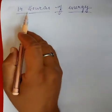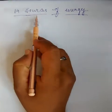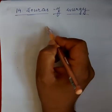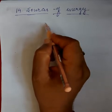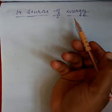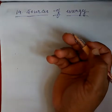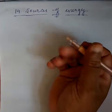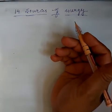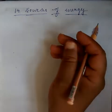Good morning. Today we start the new lesson — Chapter 14: Sources of Energy. In this chapter we discuss what is a good source of energy, fossil fuels, solar energy, thermal energy, hydropower energy, biomass energy, energy from the sea, nuclear energy, and geothermal energy. These are the topics we discuss in this chapter.